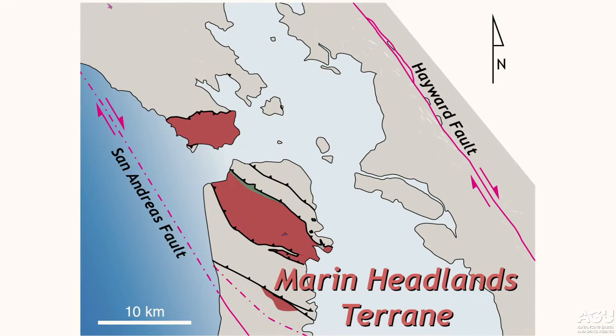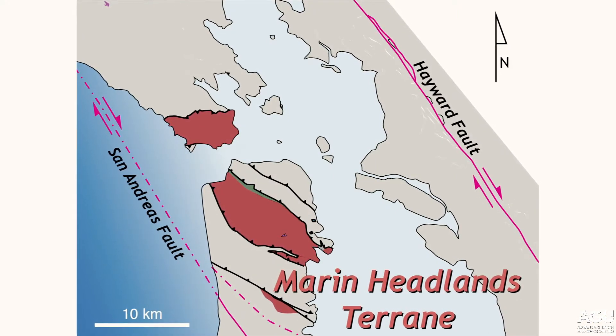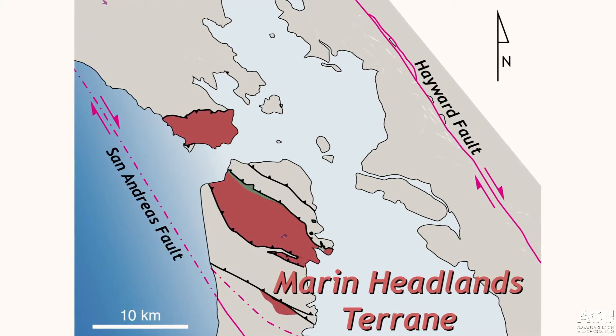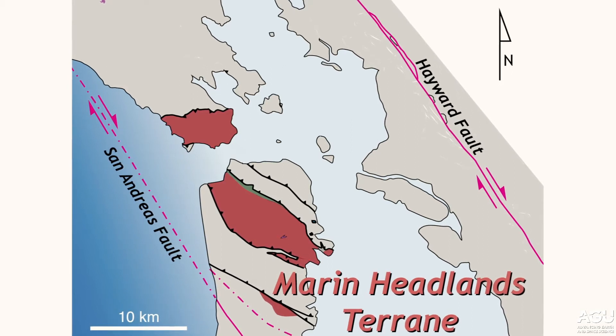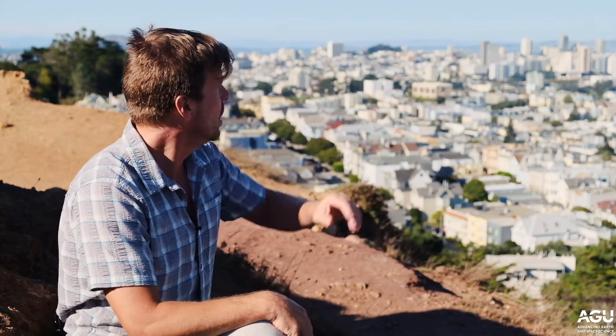If you look around the region, you find similar rocks underneath the Presidio and Golden Gate Park. You find them in the Marin headlands in great profusion, and so we call these rocks collectively the Marin headlands terrain. You're in the Marin headlands terrain here at Corona Heights Park, and that's different from other stuff that's in our field of view right now. Between us and the city there's a low-lying area, and that is Serpentinite.